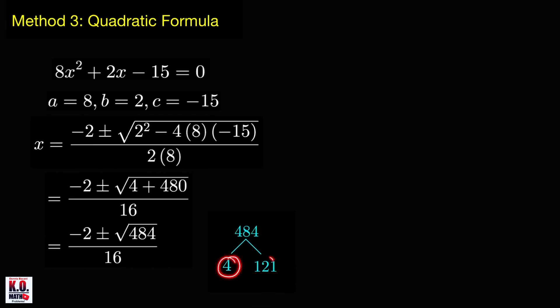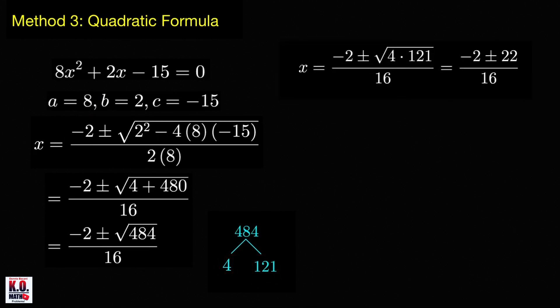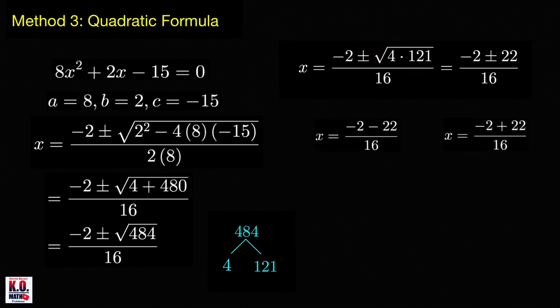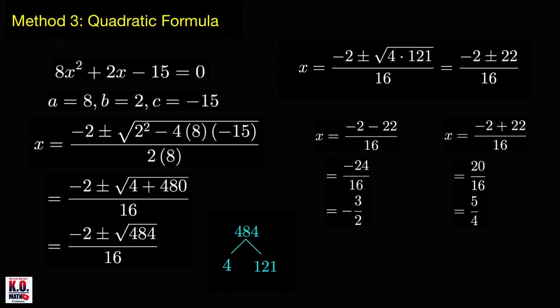Both 4 and 121 are perfect squares, so we can write the x values as: negative 2 plus or minus the square root of 4 times 121. The square root of that product is 2 times 11, which equals 22. So the two x values are: negative 2 minus 22 all over 16, and negative 2 plus 22 all over 16. The first gives negative 24 over 16, equal to negative 3 halves. The second gives 20 over 16, equal to 5 over 4. Again, we got the same values for x.